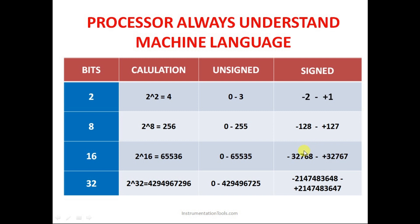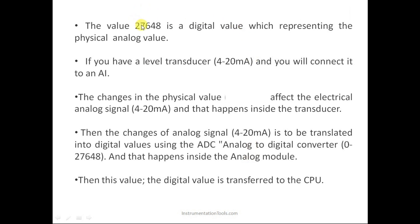The CPU then converts this digital value into the physical quantity and displays it on the computer screen. In the case of Siemens, the maximum positive range used is 0 to 27648. So for 4mA (minimum) the digital value is 0, and for 20mA (maximum) the digital value is 27648. In our example: 4 to 20mA of current maps to 15 to 85 inches of level, and 0 to 27648 is the corresponding digital value.